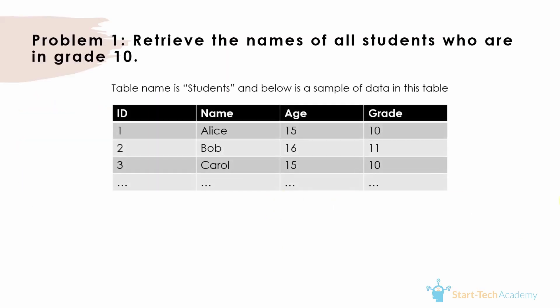Let's start with a simple problem. We have a students data table where some students belong to grade 10, some to grade 11, and so on. We want to retrieve names of all students who are in grade 10. If you know SQL, this is a very simple problem — you can write it in about 5 seconds. But if you are a beginner, you can use ChatGPT to get this query for you.